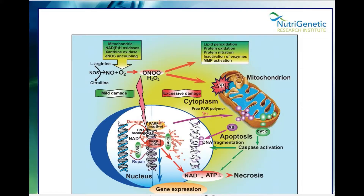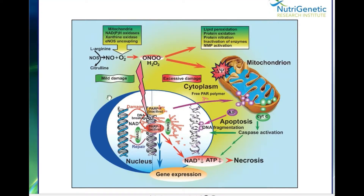When we're making peroxynitrite, we're going to start having lipid peroxidation, protein oxidation, protein nitration, inactivation of enzymes, and MMP activation. Our mitochondria is going to suffer from that — we're going to have apoptosis, DNA fragmentation, and necrosis. All of those things start escalating, and now it's going to influence gene expression, because we're dealing with semi-damaged building blocks and it just keeps going on and on.